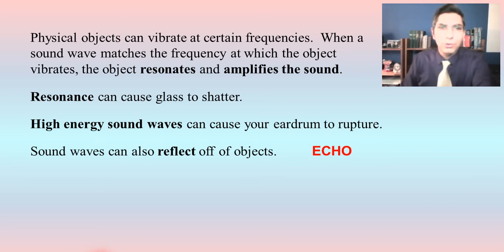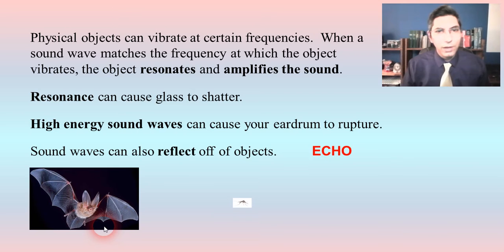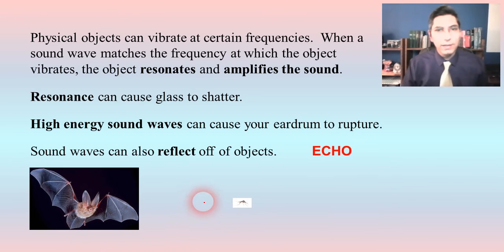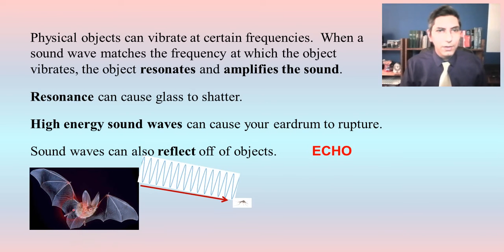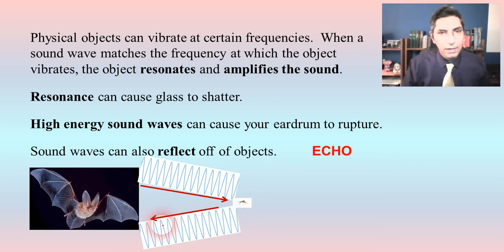That reflection can actually be used to the advantage of several living things. For example, bats find their food by means of sound waves — they're trying to find insects. The bat emits a high shrieking sound, sometimes so high that humans can't even hear it. That sound hits an insect, reflects off of it, and comes back in the direction of the bat. The bat is able to hear that reflection with its big ears.